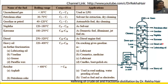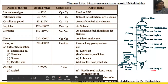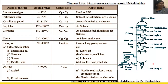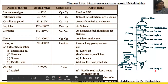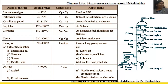The next fraction separated out is diesel oil, with a boiling range of 250 to 320°C, containing around C10 to C18 carbon atoms, and used as diesel engine fuel. At 320 to 400°C we get heavy oil, which contains C17 to C30 carbon atoms and is used to make gasoline by the cracking process.